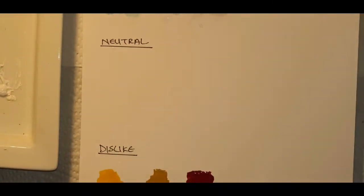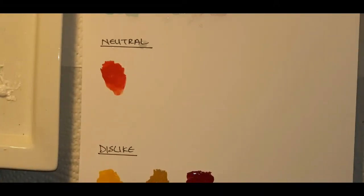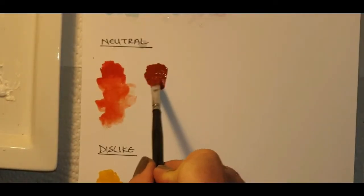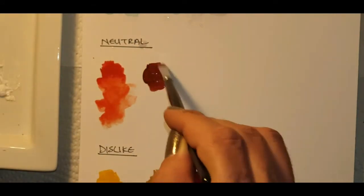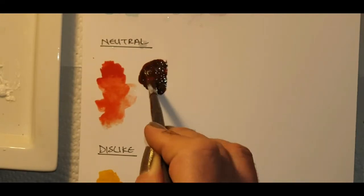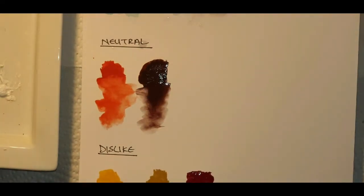So it is interesting to analyze why it is that you dislike a color because it does show you aspects of your psychology and emotions that you might be neglecting. Neutral tones are colors that you don't feel anything in particular about, you don't have a positive or a negative reaction to it, it's just neutral. So here I'm doing an orange and I'm doing a brown and I'm also going to be doing black.